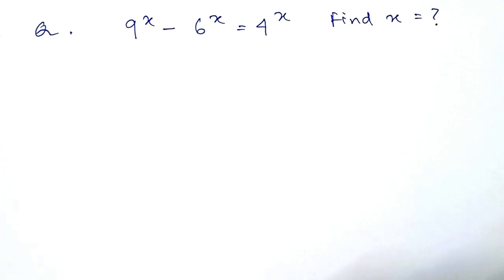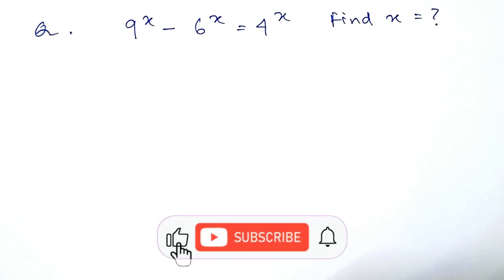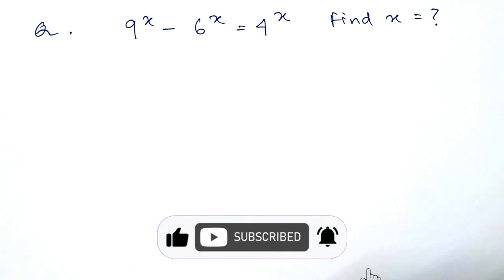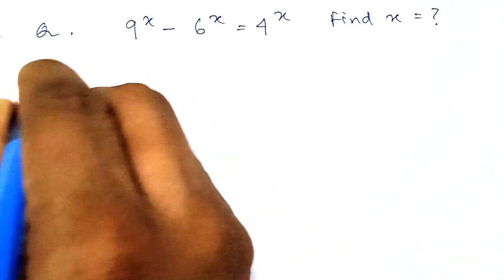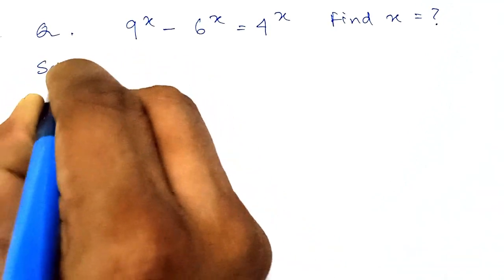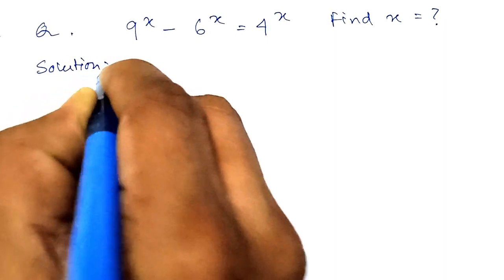Welcome to today's maths class. Our problem is 9 to the power x minus 6 to the power x is equal to 4 to the power x, from where we have to find out the value of x. Now let us see the step by step solution.